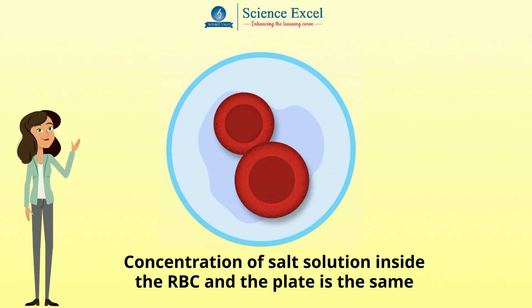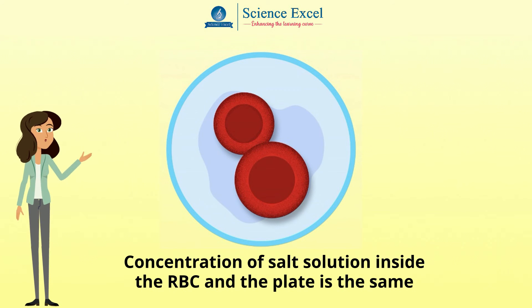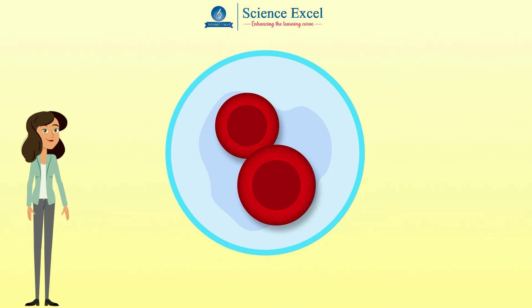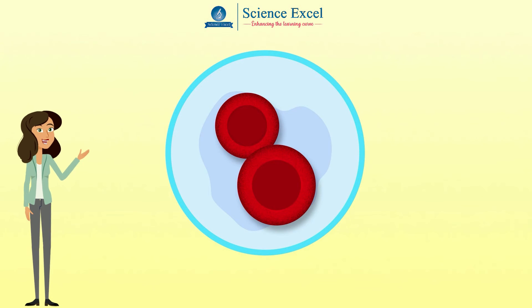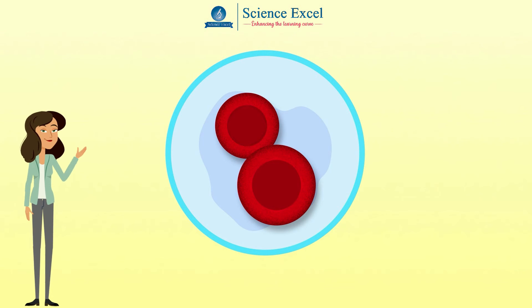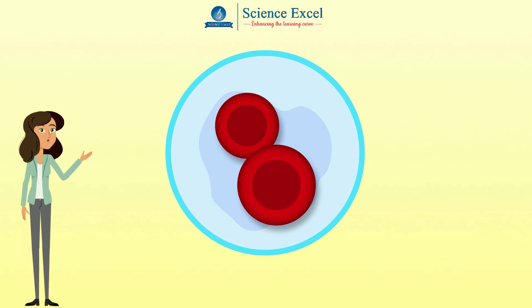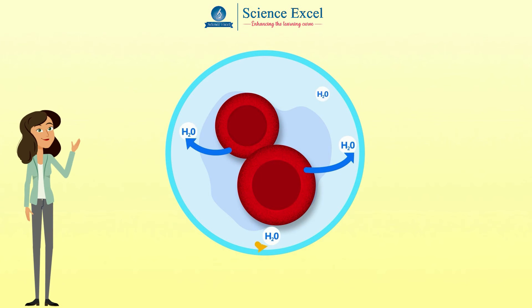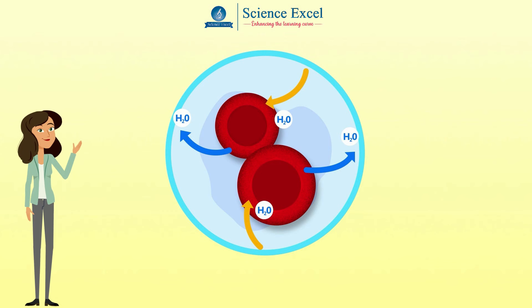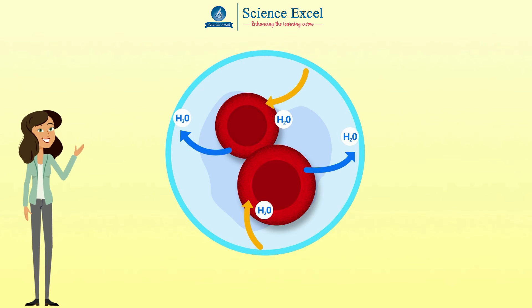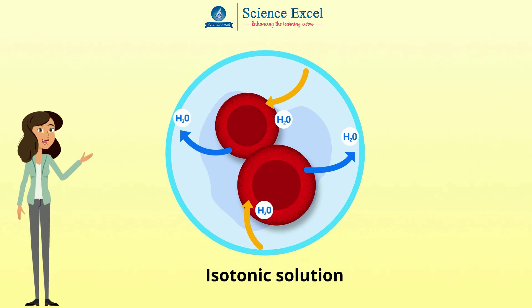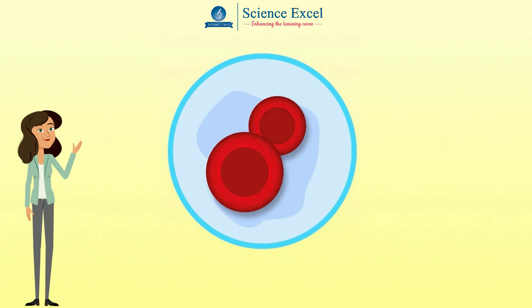Now let us look at the second plate. The concentration of salt solution both inside the red blood cells and outside in the plate is the same. Therefore, the net movement of water molecules is the same in both directions — from inside to outside and outside to inside. As a result, the size of the cells does not change. This kind of solution is called an isotonic solution.